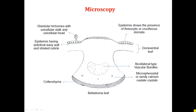The epidermis shows the presence of anisocytic and cruciferous stomata. Anisocytic stomata is a characteristic feature of drugs belonging to the Solanaceae family, so all three drugs — Hyoscyamus, Belladonna and Datura — will show anisocytic and cruciferous stomata. A unique characteristic is that the epidermal cell walls are anticlinal wavy walls, not straight walls, with striated cuticles.